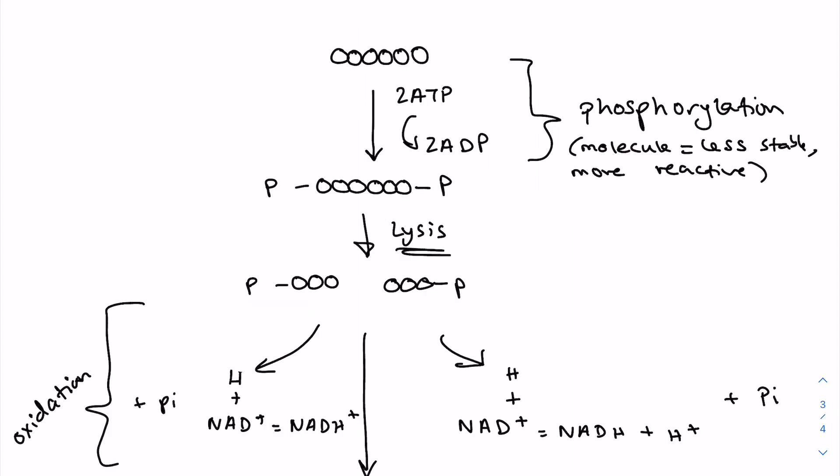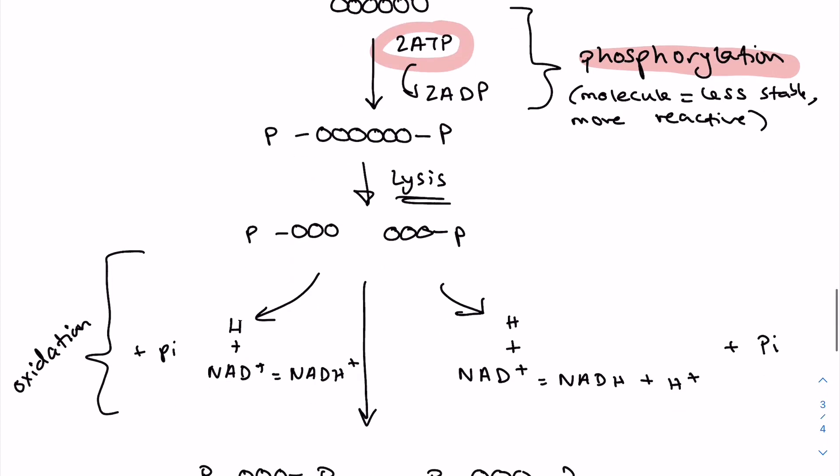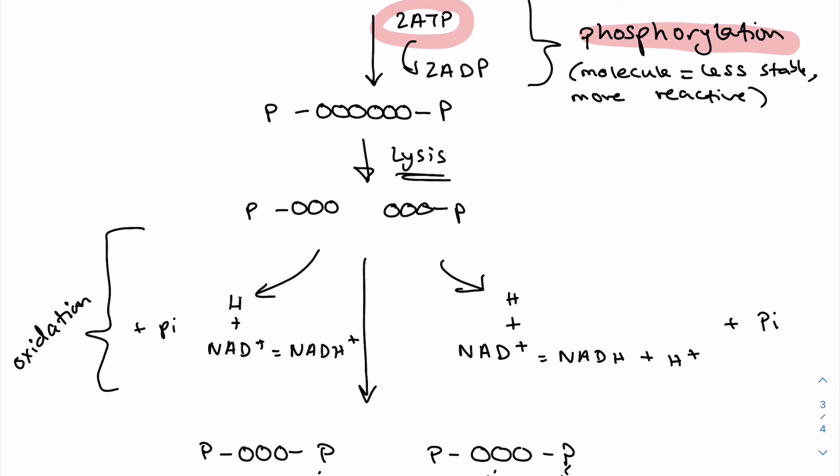So the first step is phosphorylation. Glucose is phosphorylated, meaning that phosphate groups have been added to it, and this process requires two ATP molecules, meaning that it actually requires an energy input. And this forms this molecule which is a hexose biphosphate. And again, you don't need to memorize that because we have six carbons here and two phosphates, which makes hexose biphosphate.